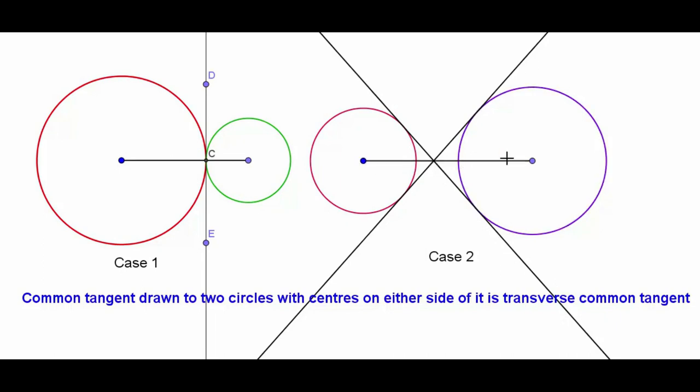Construction of DCT is possible in two cases: when two circles touch each other externally or at a distance apart.